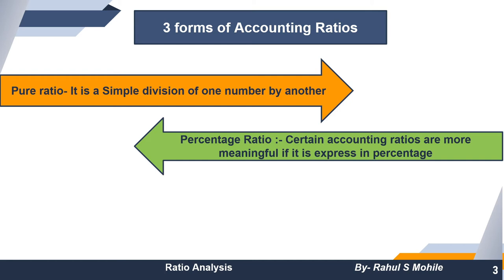Percentage ratio is expressed as a percentage, so it is immediately understandable. For example, if I say operating expenses are 40% of net sales, it means the weightage of operating expenses relative to net sales is 40%. If the company's gross profit margin is 40%, we can interpret that sales is 100%, GP is 40%, so cost of goods sold (COGS) is 60%. It becomes very easy and meaningful to express ratios in percentage format.